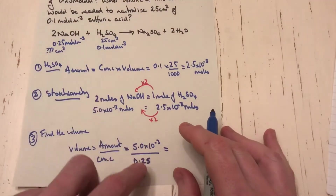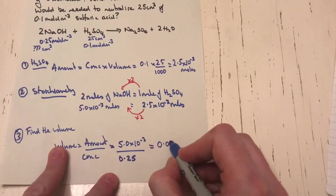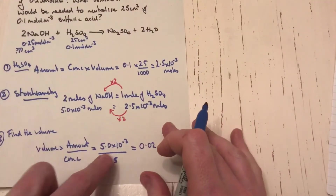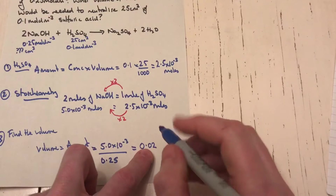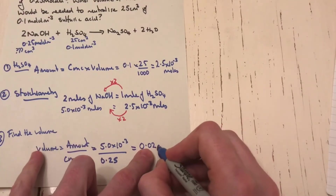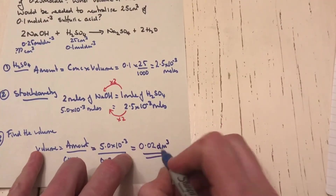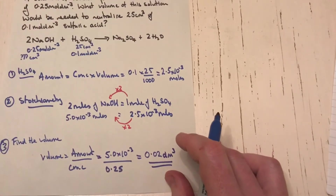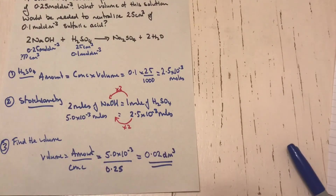Calculating on the calculator: 5.0 × 10⁻³ ÷ 0.25 gives 0.02. This is in dm³, so the final answer is 0.02 dm³. It is fine to leave the answer in dm³.